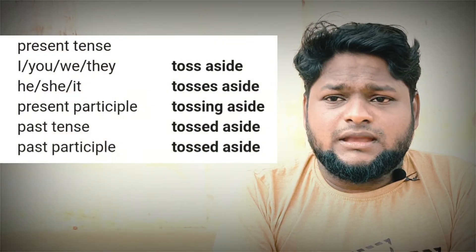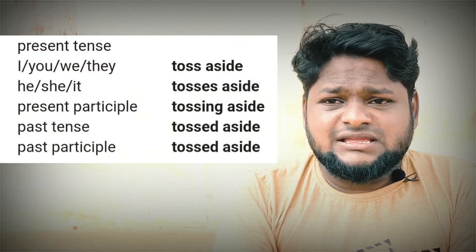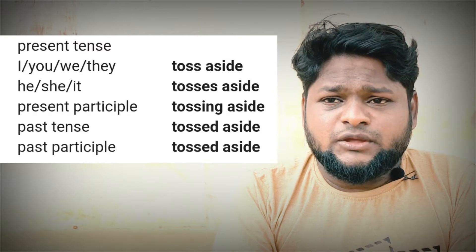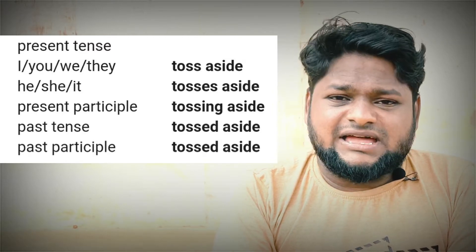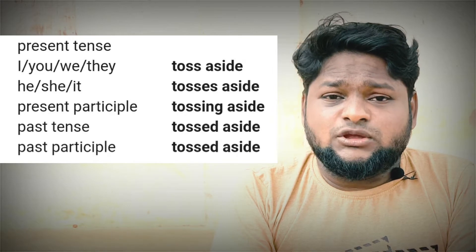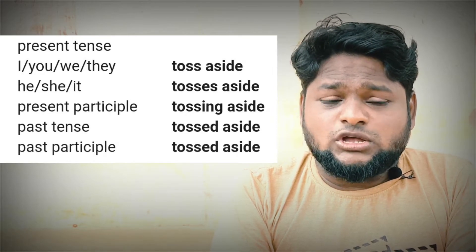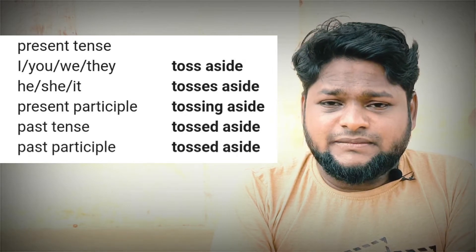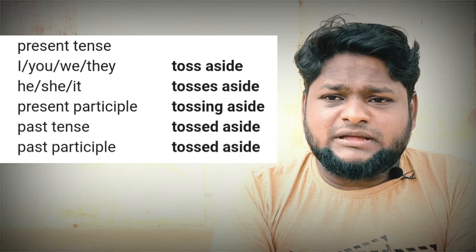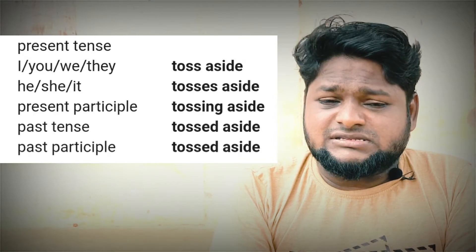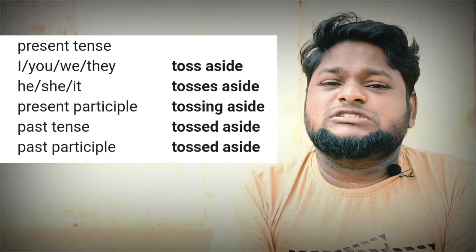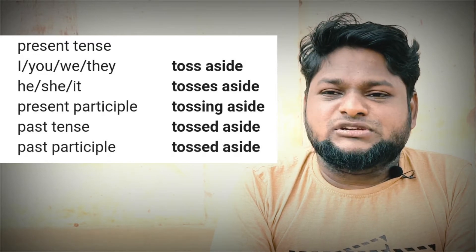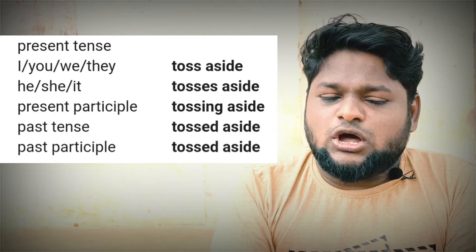How does this word appear in a sentence? In present tense — I, you, we, they — it appears as toss aside. In third person singular it appears as tosses aside. In present participle it appears as tossing aside. In past tense and past participle this word appears as tossed aside.